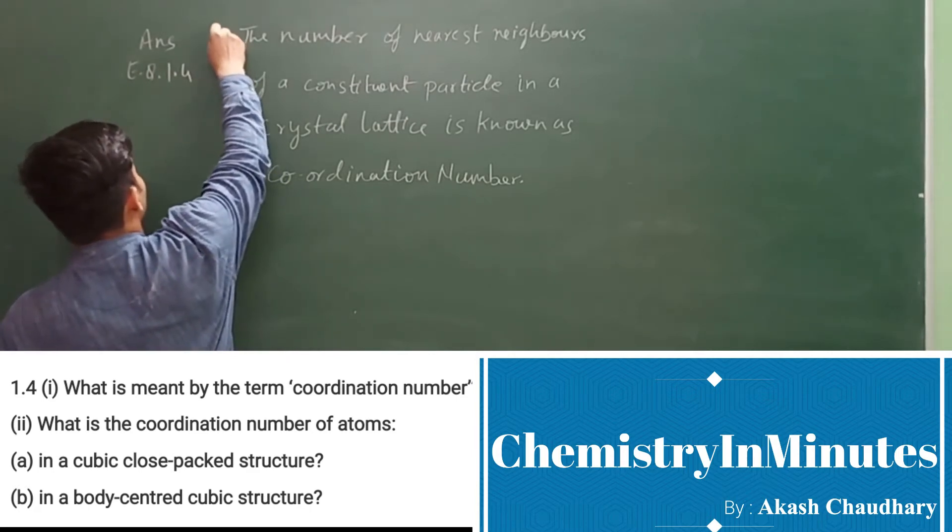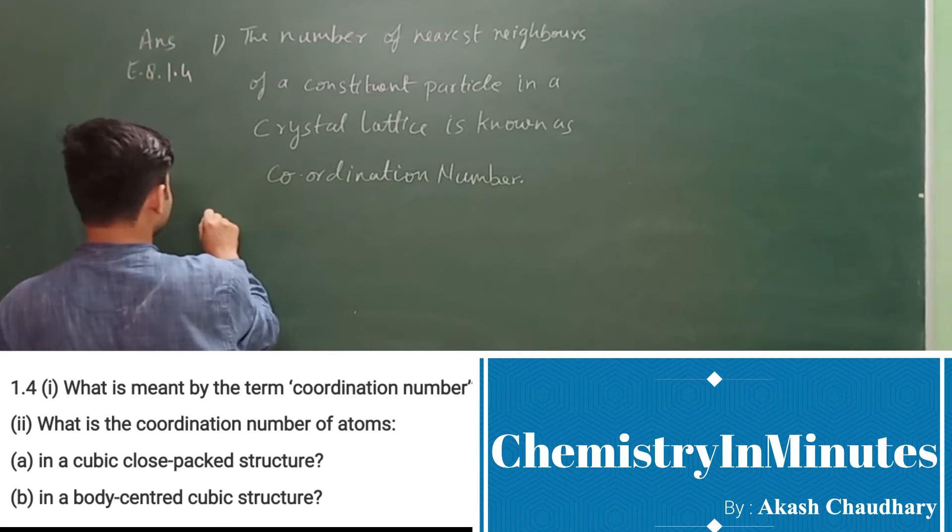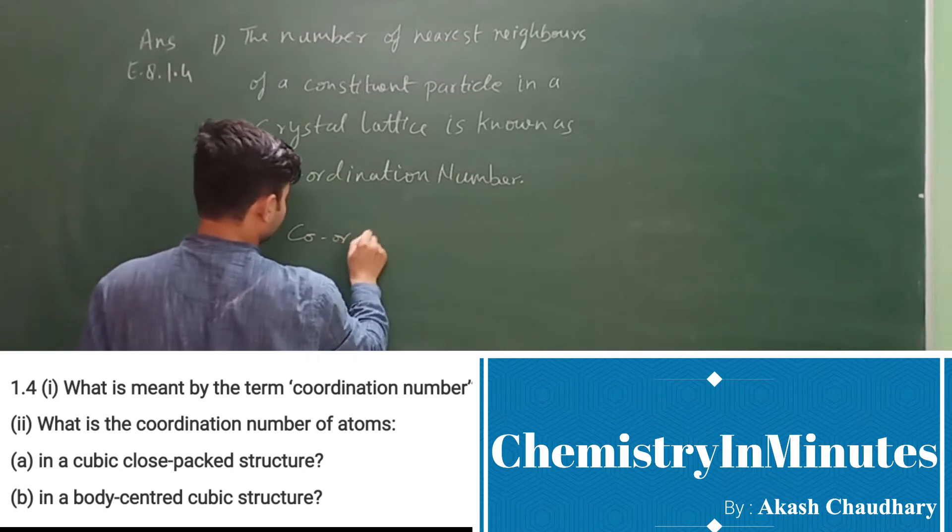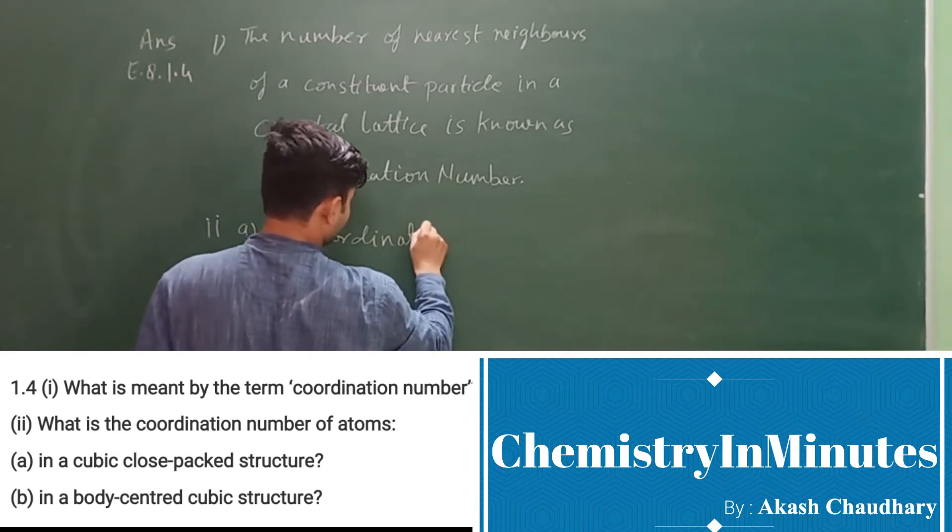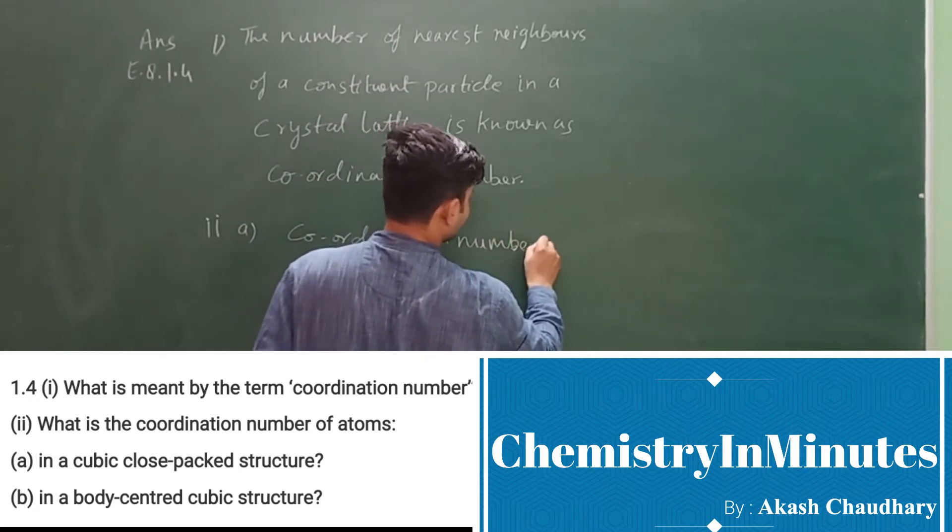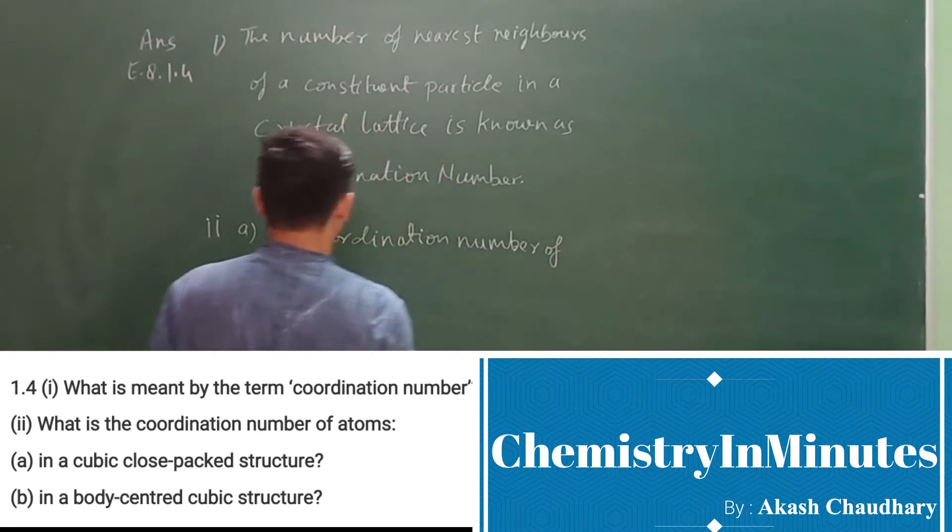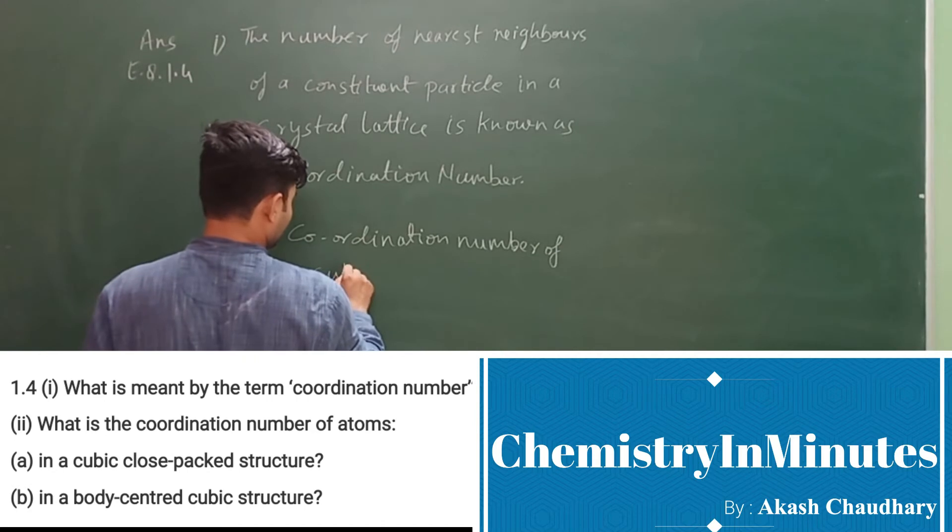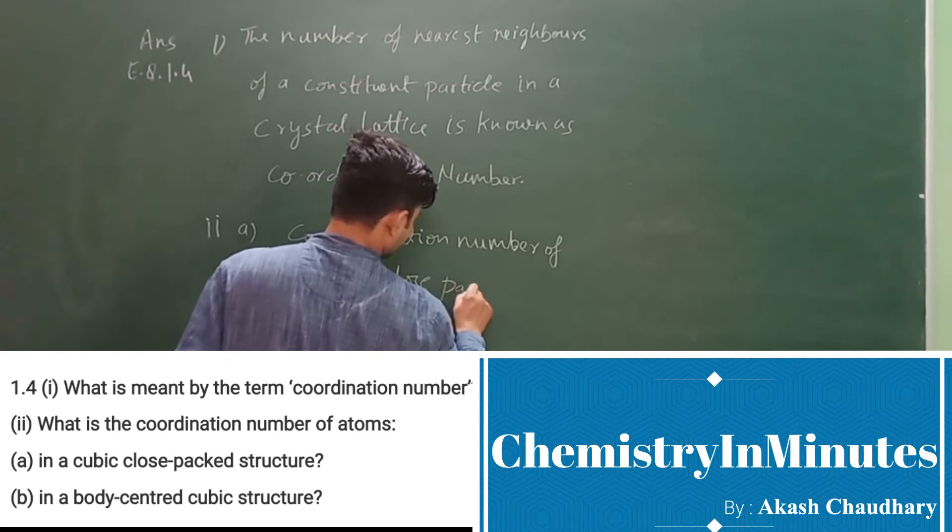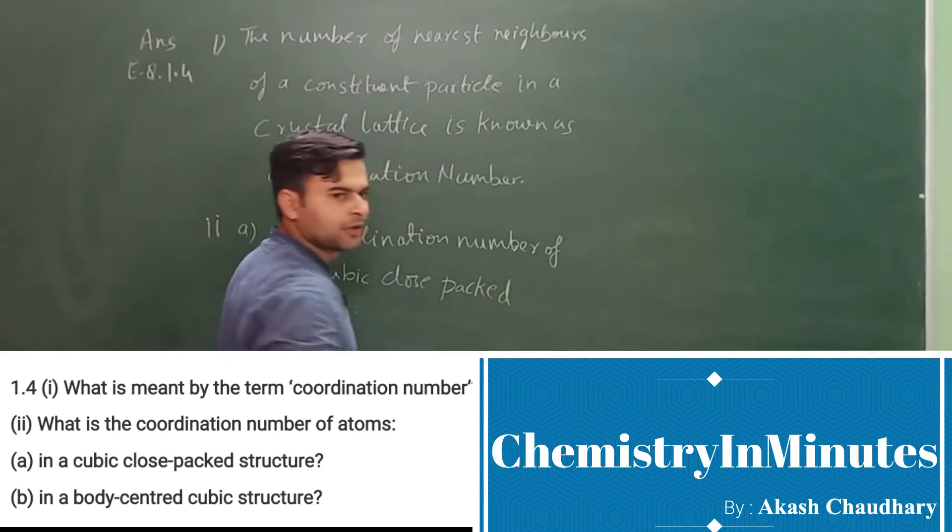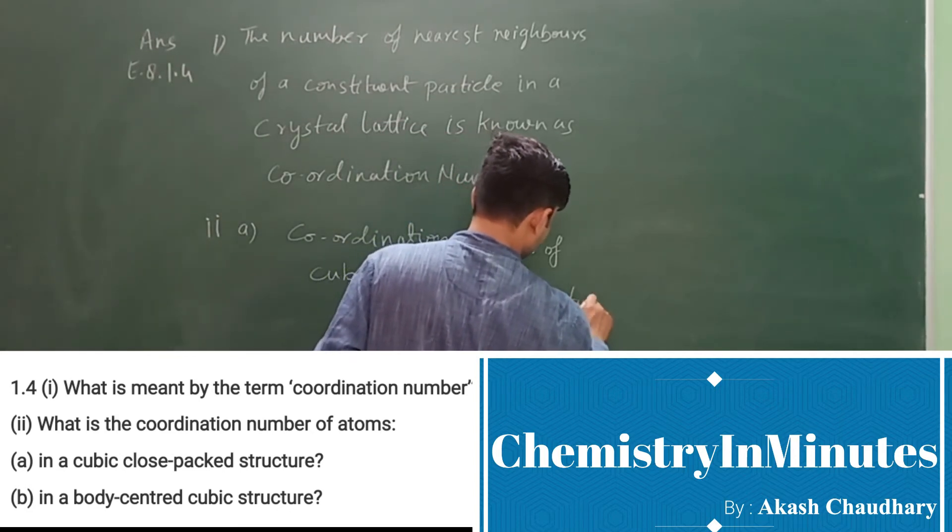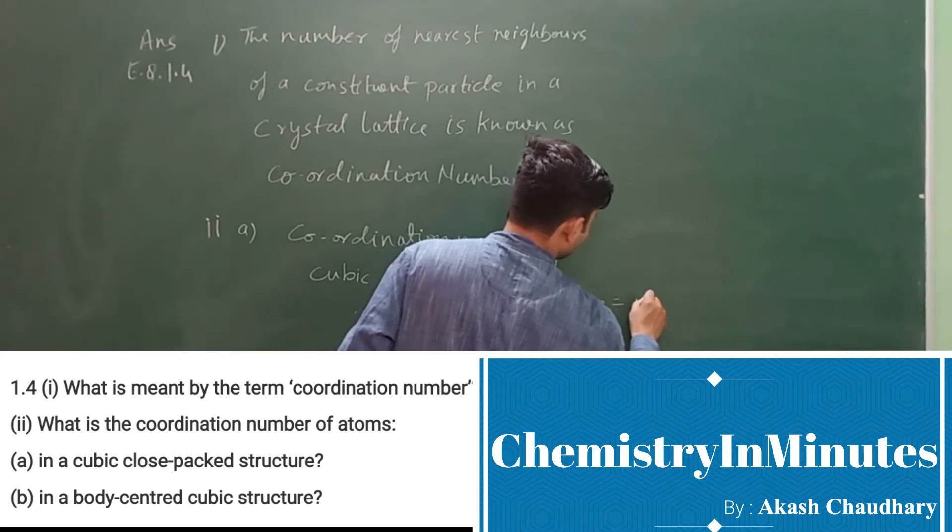Now that was the answer of the first part. Now answer to second part (A): coordination number of cubic close-packed structure equals 12.